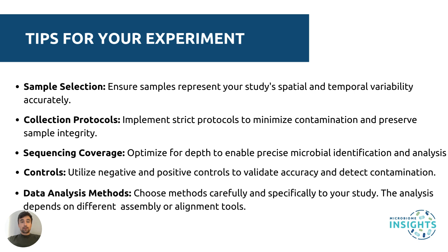To conclude, the practical tips to keep in mind when planning your shotgun metagenomic sequencing study include: sample selection — ensure your samples accurately represent the spatial and temporal variability of your study area. Collection protocols — follow strict protocols to prevent contamination during collection and storage. Sequencing coverage — optimize your sequencing depth to ensure identification of all microbial taxa of interest. Controls — include negative and positive controls to validate your results and detect contamination or extraction bias early on. Data analysis — choose methods tailored to your specific research questions, as assembly and alignment tools vary based on the type of study.